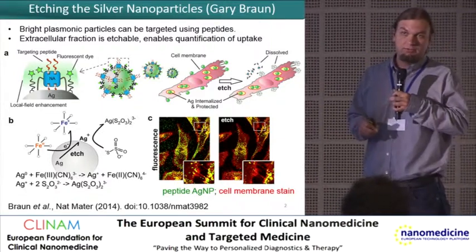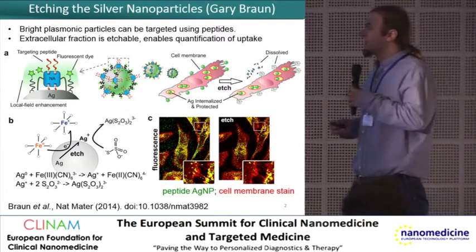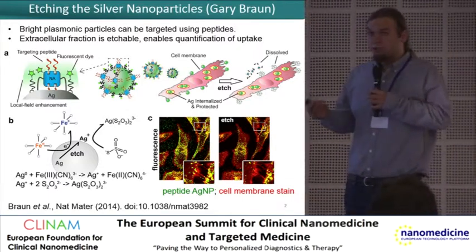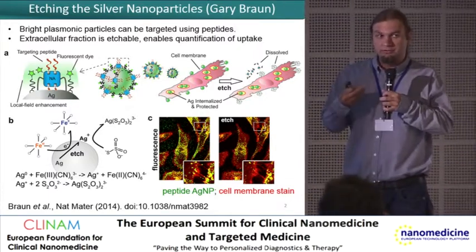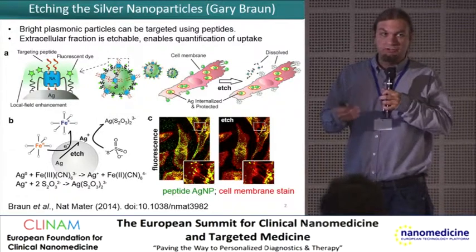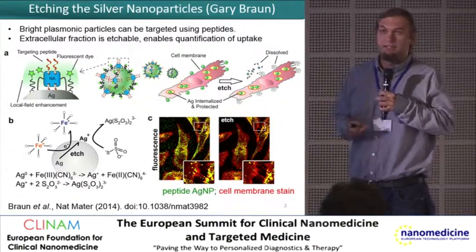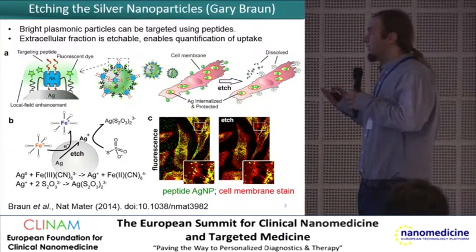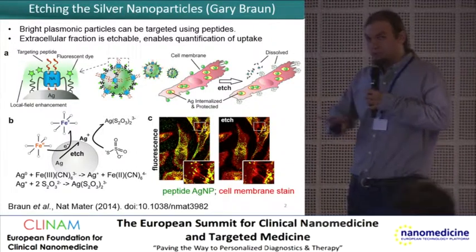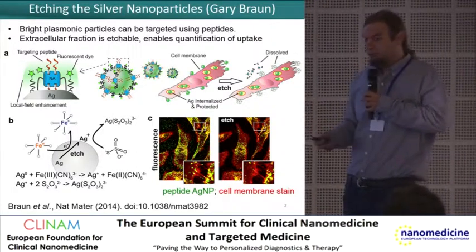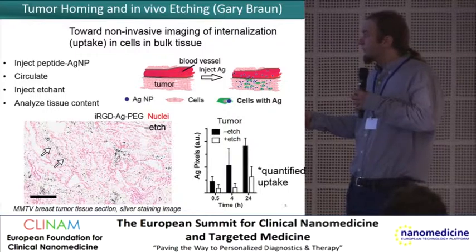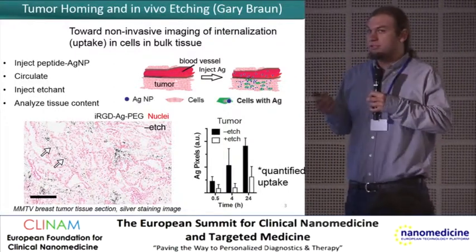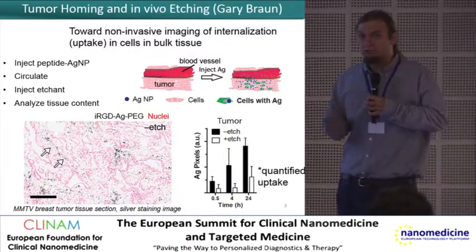The reason that only the extracellular particles become etched is because this redox agent is highly charged and is not able to permeate the membrane. In a confocal image — confocal is typically used to image internal versus external particles by z-stack — here we can use the chemical method instead, without needing a z-stack, and just take a plain image.